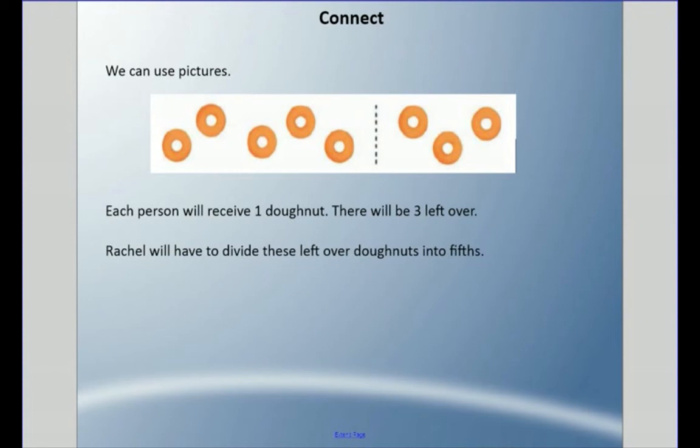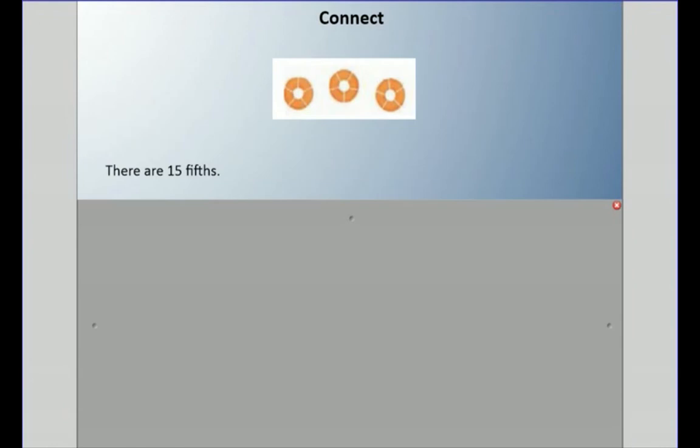Rachel's going to have to divide these three extra donuts into fifths, because there are five people. If we count all the fifths together - I'm sure it's a grainy image - we get 15 fifths altogether.